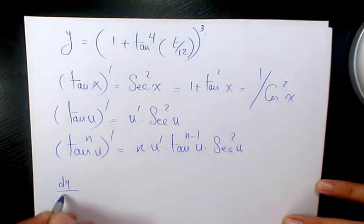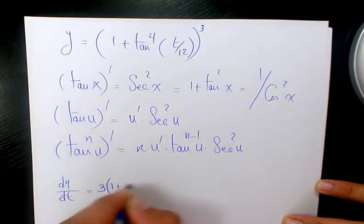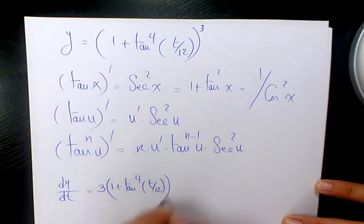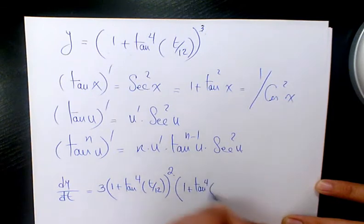dy over dt is going to be 3 times 1 plus tan to the power of 4 t over 12 to the power of 2, times the derivative of 1 plus tan to the power of 4 of t over 12. That's going to be the derivative.